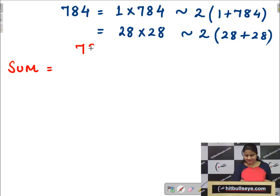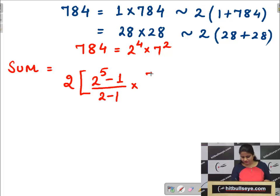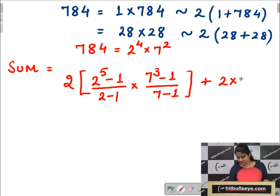Since 784 can be written as 2 raised to power 4 into 7 squared. Now the formula time. Apply that formula. That will be twice of 2 raised to power 5 minus 1 upon 2 minus 1 into 7 cubed minus 1 upon 7 minus 1 plus.